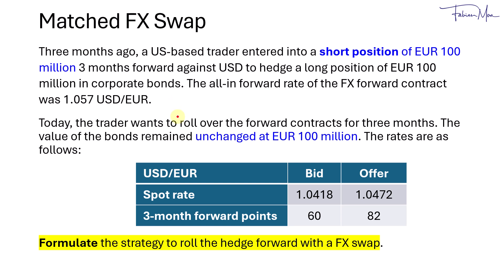Today, the forward contract is nearing maturity, and the trader needs to roll over the hedge for another three months. The value of the bonds has remained constant at 100 million euros, and the updated market rates are as follows: the spot rate for dollar per euro is 1.0418 for the bid and 1.0472 for the offer, and the three-month forward points are 60 bid and 82 offer.